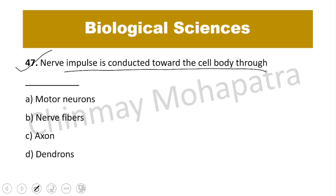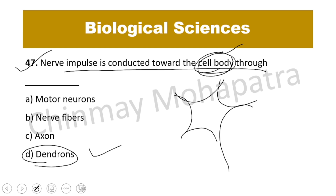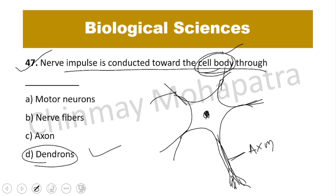Question 47: Nerve impulse is conducted towards the cell body through — it is through the dendrons, because one neuron's dendron is attached to another neuron's cell body. The nerve cell structure has a cell body with a nucleus, dendrites attached to it, a long axon, and an axon terminal where another nerve cell connects through dendrites or dendrons.